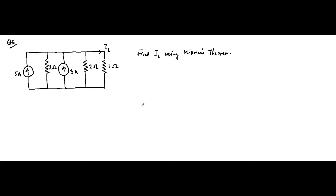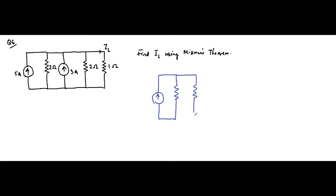We can use Millman's theorem to simplify this circuit. The Millman equivalent here will be the Norton equivalent circuit. Previously, when voltage sources were present, we used the Thevenin equivalent circuit — a voltage source along with the equivalent resistance in series. But here we will be determining the Norton equivalent circuit. This is the Norton's current, this is the equivalent resistance, and this is the 1 ohm load resistor.